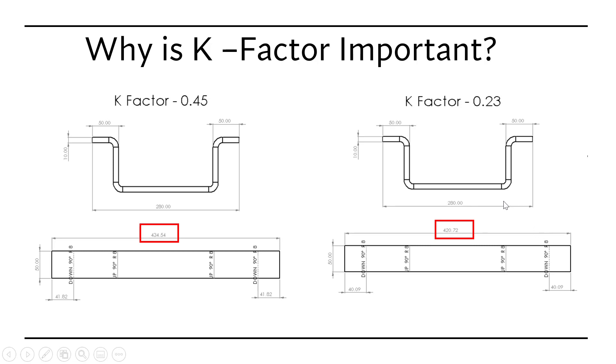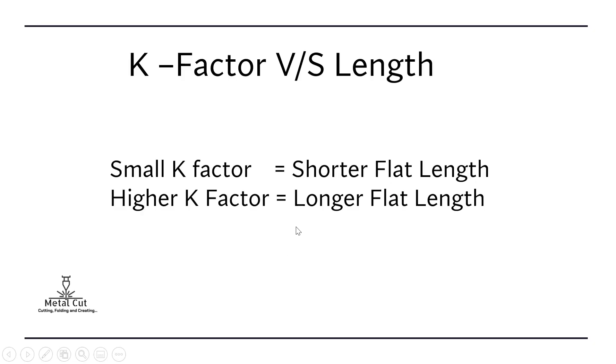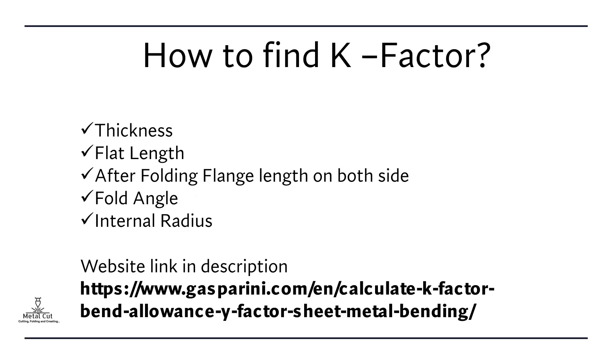So you can easily see a small difference can make a huge impact on the metal. So the way this works is if you have a smaller K factor, the length you will produce will be shorter. If you have a higher K factor, then you will get a longer flat length.